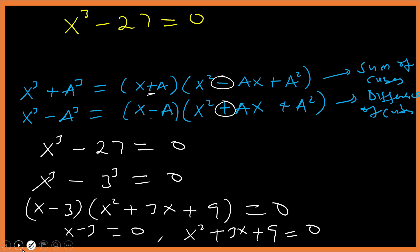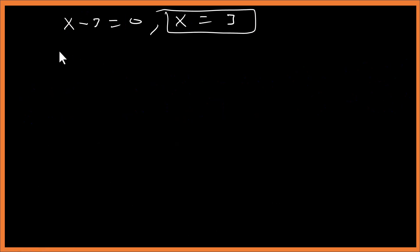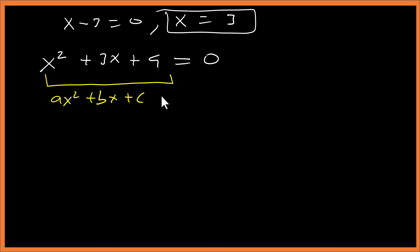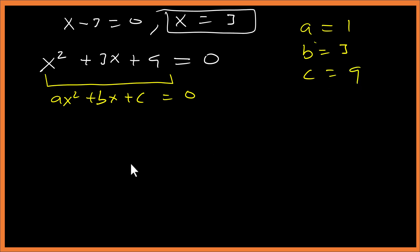For x squared plus 3x plus 9 equals to 0, we compare this with the general quadratic equation x squared plus Bx plus C equals to 0. We have a equals 1, B equals 3, and C equals 9. With this we can go ahead and apply the quadratic formula.